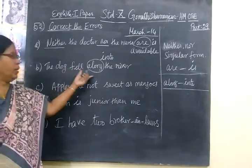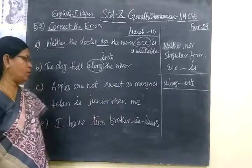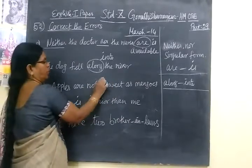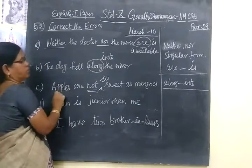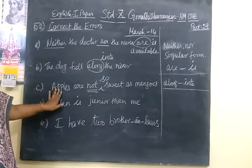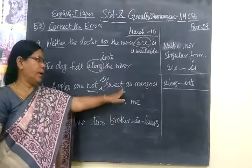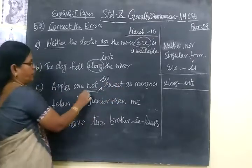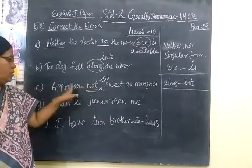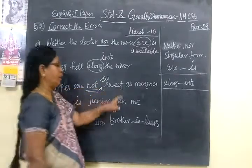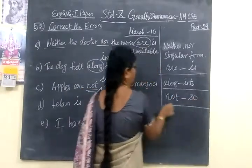'Apples are not so sweet as mangoes.' This is positive form — not 'as sweet as' but 'not so sweet as.' When you have negative comparison in positive degree, instead of 'as' you can use 'so' only. Correction: 'Apples are not so sweet as mangoes.' The keyword is 'not,' and for that you are using 'so.'